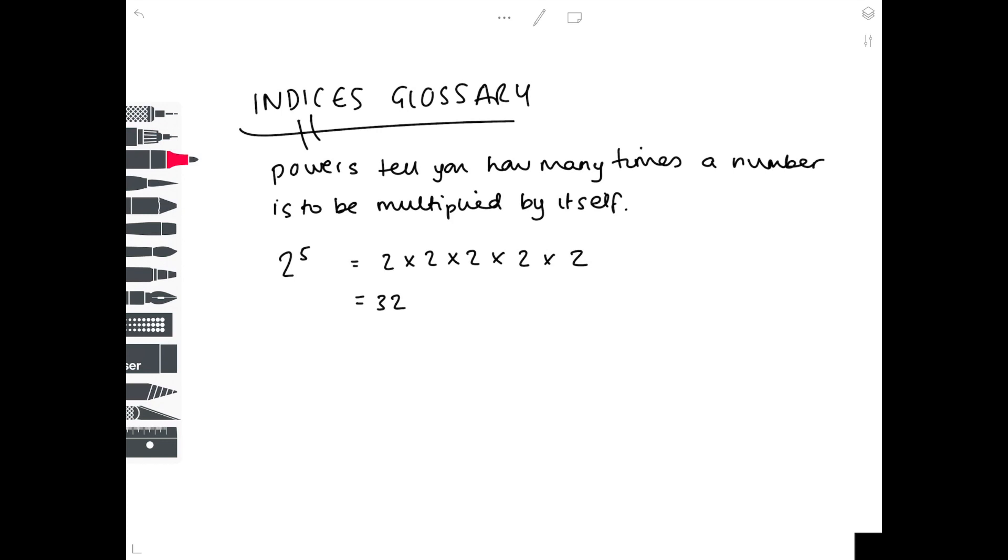Next up, you need to be aware that the reverse of raising to a power is taking a root. For example, if we do the square root of 16, you have to work out what number is multiplied by itself to get 16. That answer is 4, so the square root of 16 is 4.